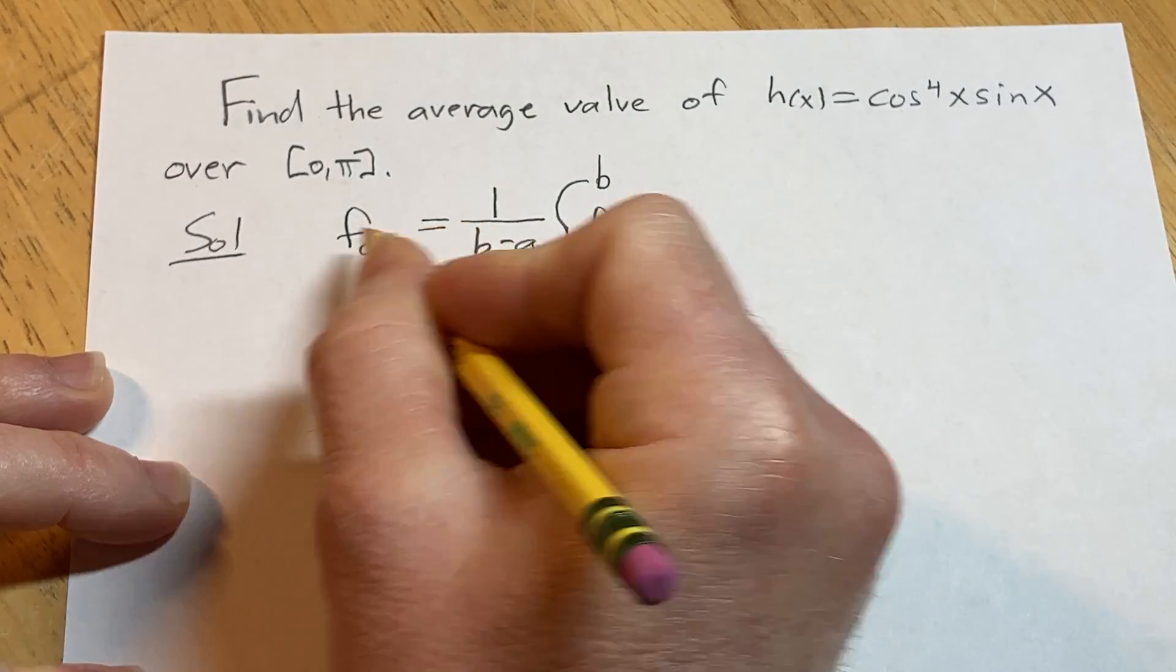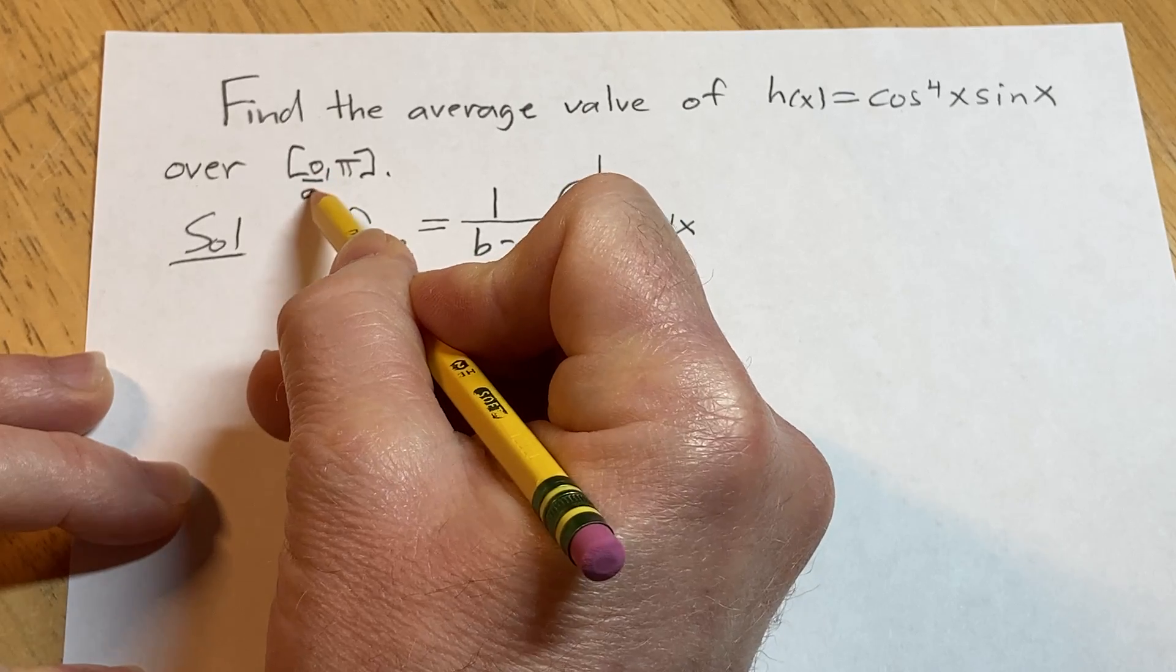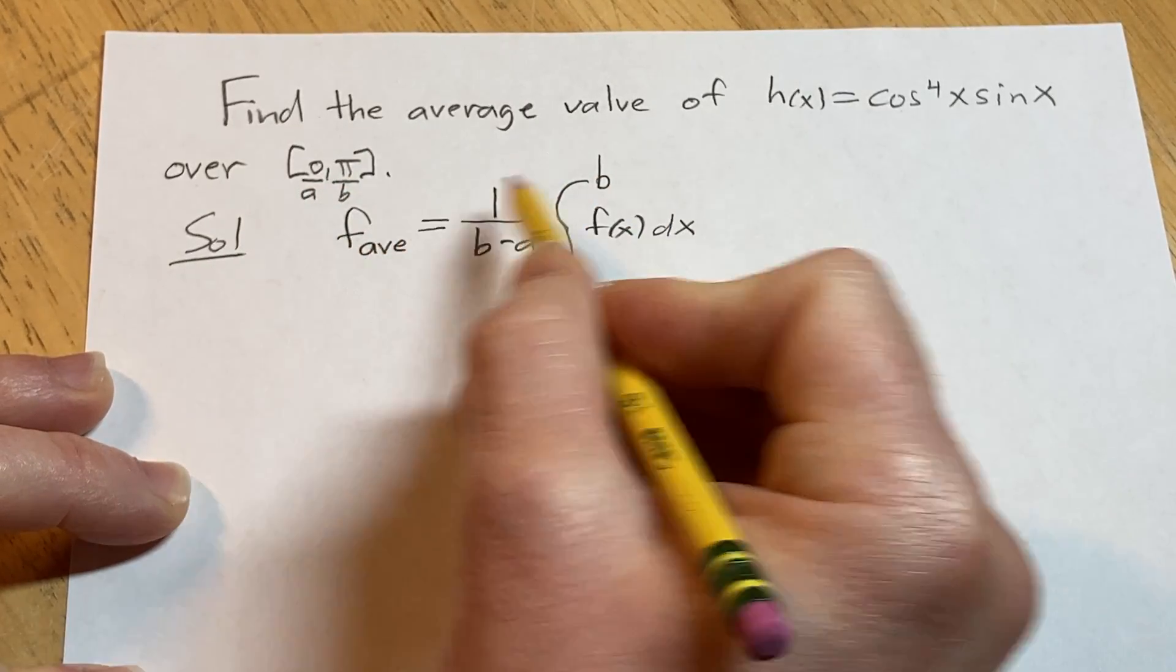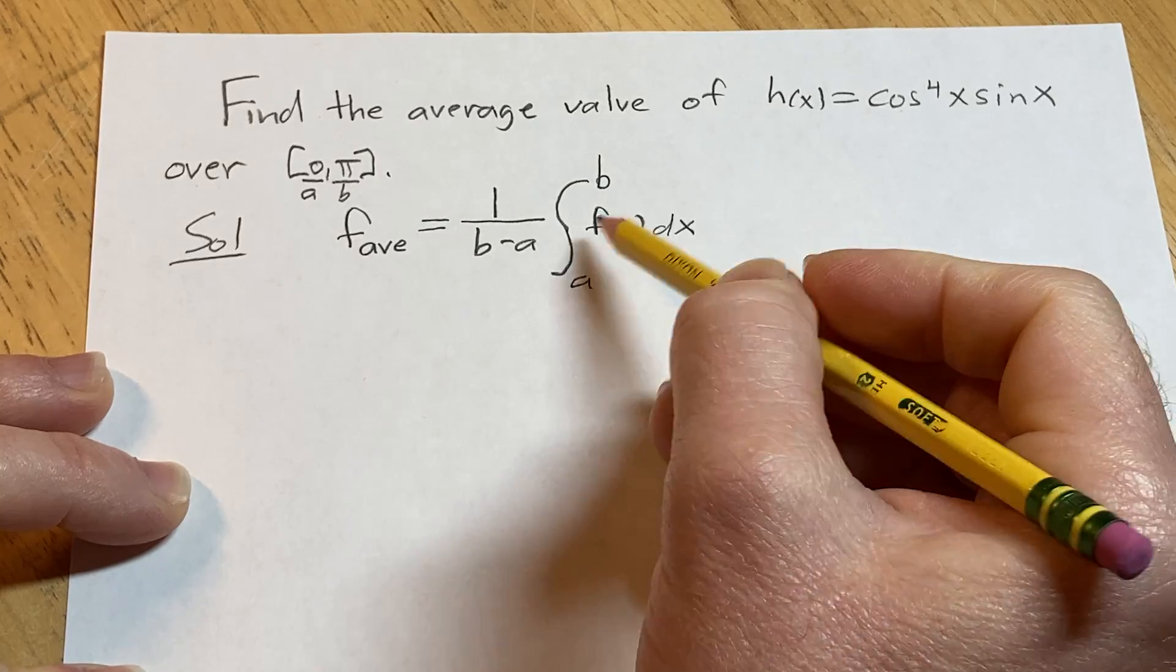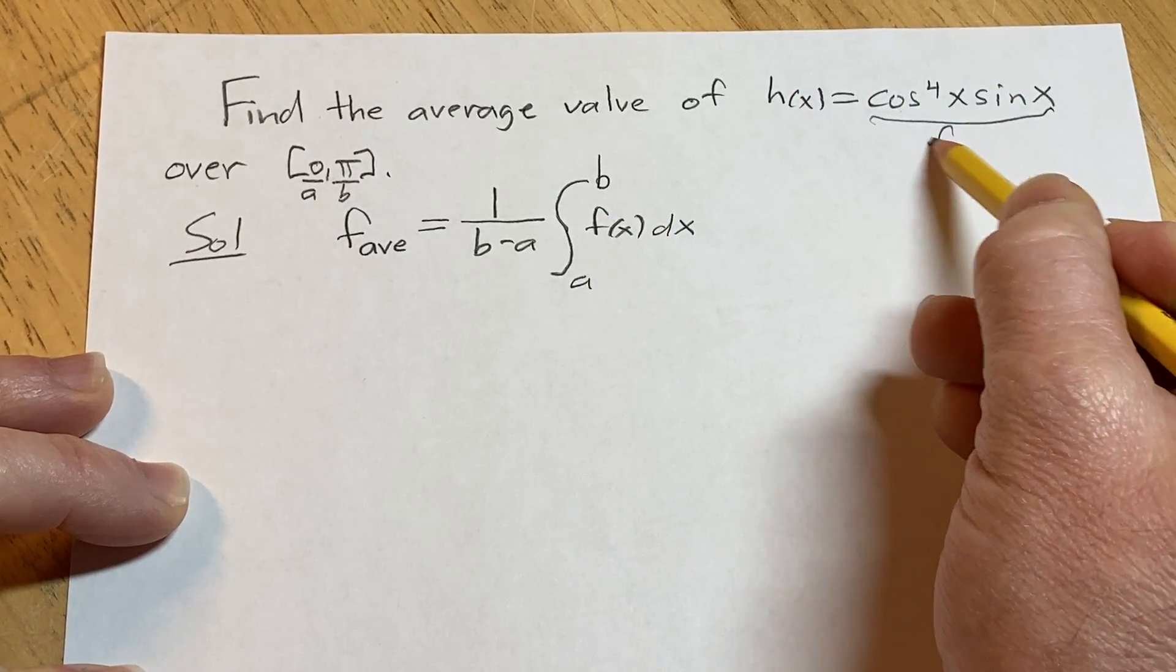And so in our particular problem we already have all of these things. So a here is going to be 0 and b is going to be pi. And instead of f of x we have h of x but this here is going to be our f of x.